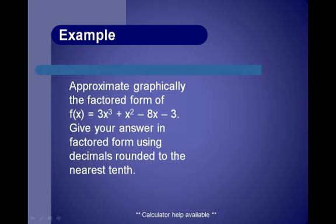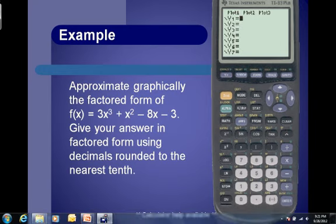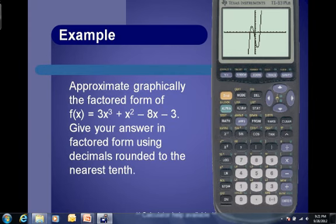We can also use our calculator to approximate graphically the factored form of a function. For f of x equals 3x to the third plus x squared minus 8x minus 3, give the factored form using decimals rounded to the nearest tenth. Remember that another name for a zero is the x-intercept, because that's what makes the function equal to zero. In the calculator, enter the function as y equals and use Zoom 6 to graph. The function crosses the x-axis in three places, so there should be three x-intercepts.